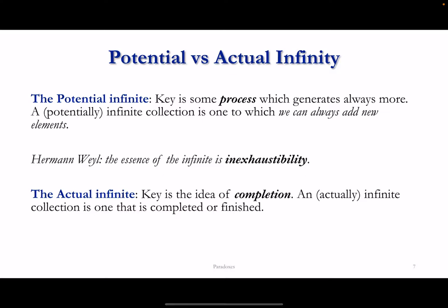Let's try to make sense of this distinction. One way to express it is by highlighting that the potential infinite is that which can be given through a process. Key to the potential infinite is a process which generates always more. So if you think of an infinite collection as a potential infinite, you think of it as one to which we can always add new elements.